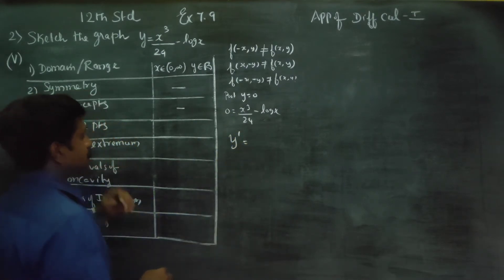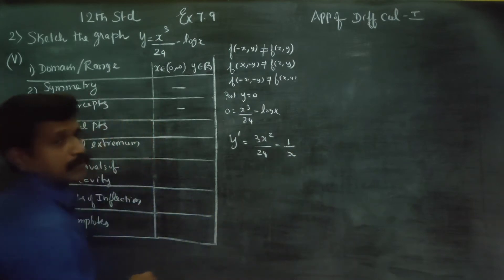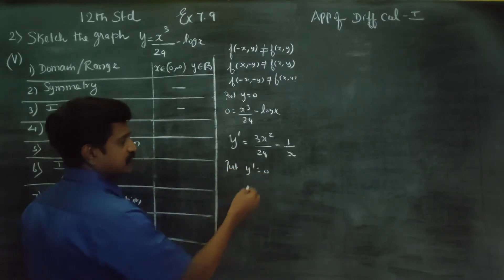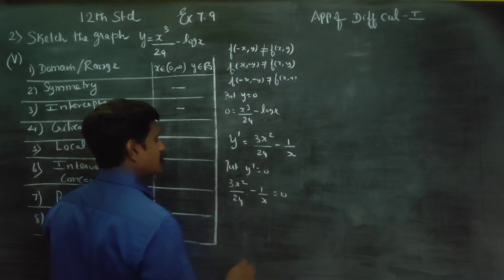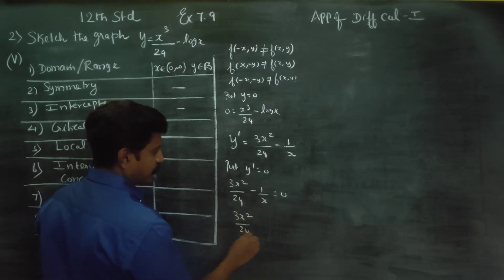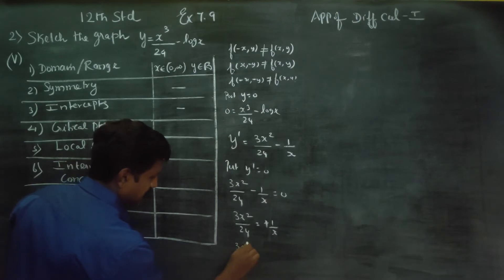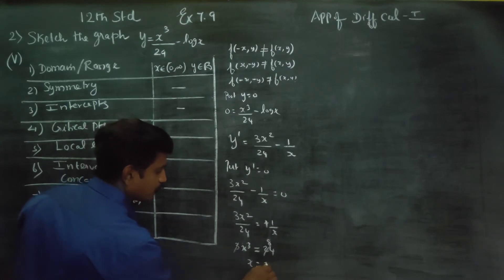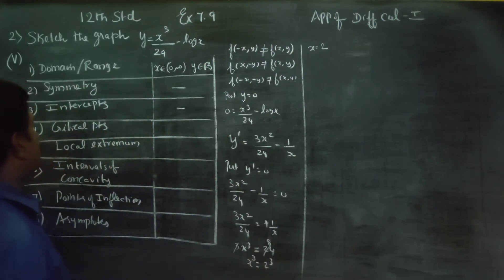First you have to differentiate: y dash equals 3x squared by 24 minus 1 by x. For critical points, put y dash equal to 0, that is dy/dx equal to 0. So 3x squared by 24 minus 1 by x equals 0. Cross-multiplying: 3x cubed equals 24, so x cubed equals 2 cubed, therefore x equals 2. That is the critical number.